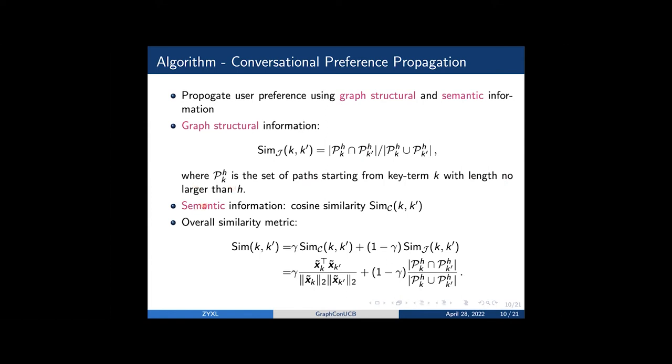Besides, we also leverage semantic information, which is defined as cosine similarity between the feature vectors of K and K prime. Our agent takes a hybrid metric to measure the similarity between key terms. Here gamma is between 0 and 1 to balance these two kinds of similarity metrics.